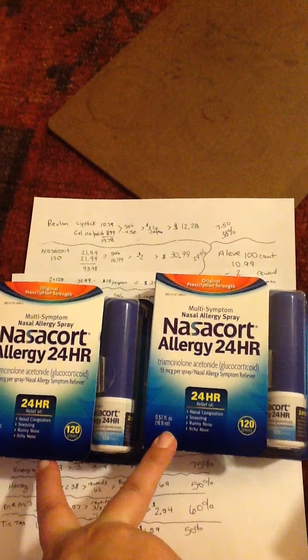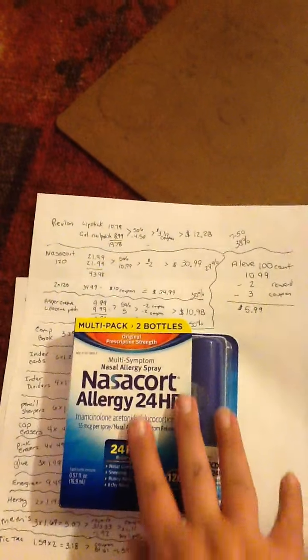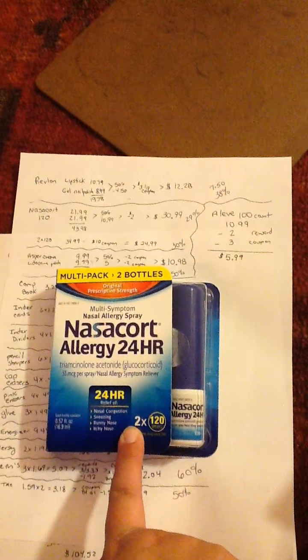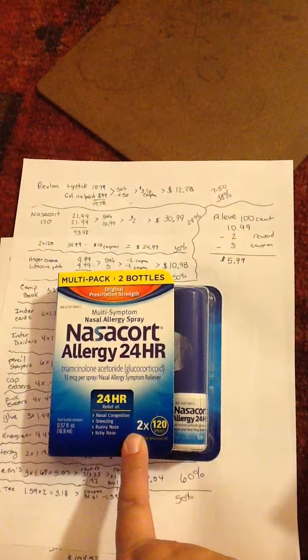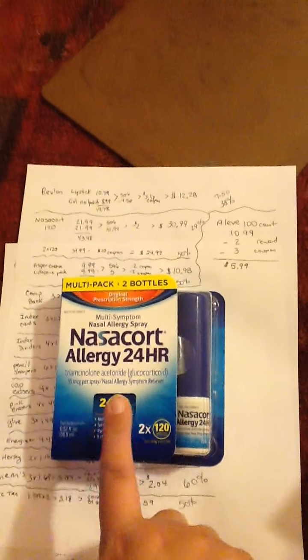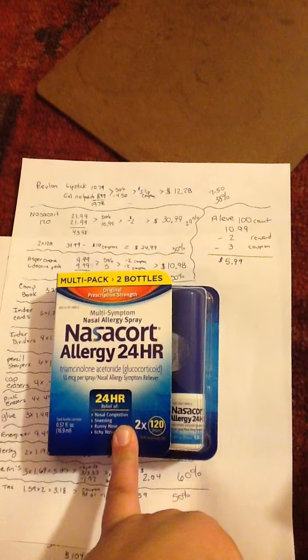These came to $30.99, which is a 29% savings. Then they had in the circular today for the 2-pack a $10 coupon. Normally $34.99, minus the $10 coupon came to $24.99, which is a 30% savings.